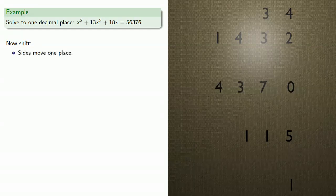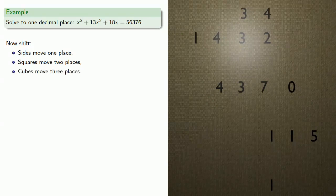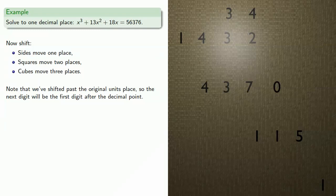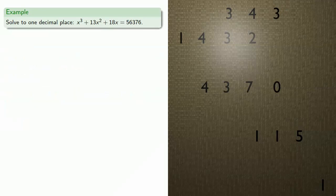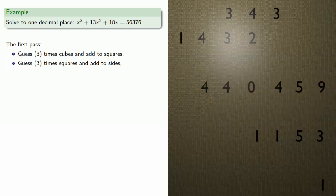And shift: sides move one place, squares move two places, cubes move three places. Note that we've shifted past the original units place, so the next digit will be the first digit after the decimal point, and we guess three. We go through our first pass: guess times cubes and add to squares, guess times squares and add to squares, guess times sides, and subtract from the number.